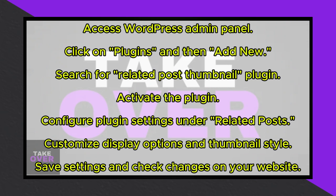Begin by accessing your WordPress admin panel. On the left-hand side, you'll find various options such as home, updates, posts, media, pages, comments, and more.